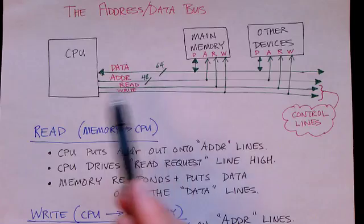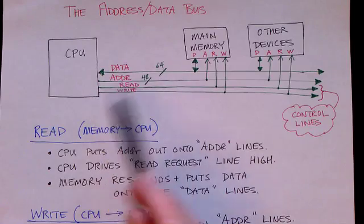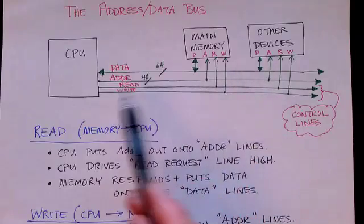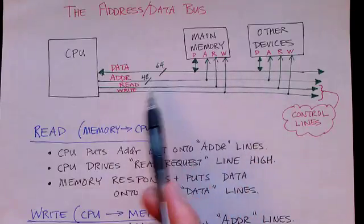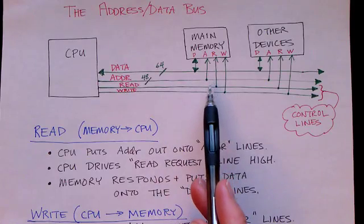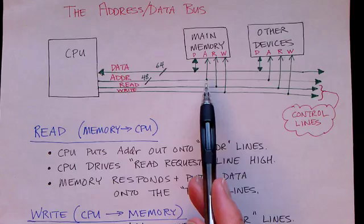And so I'm drawing the functional units—the CPU, the main memory, and maybe some other devices—as rectangles here. And these green lines down below are just wires.